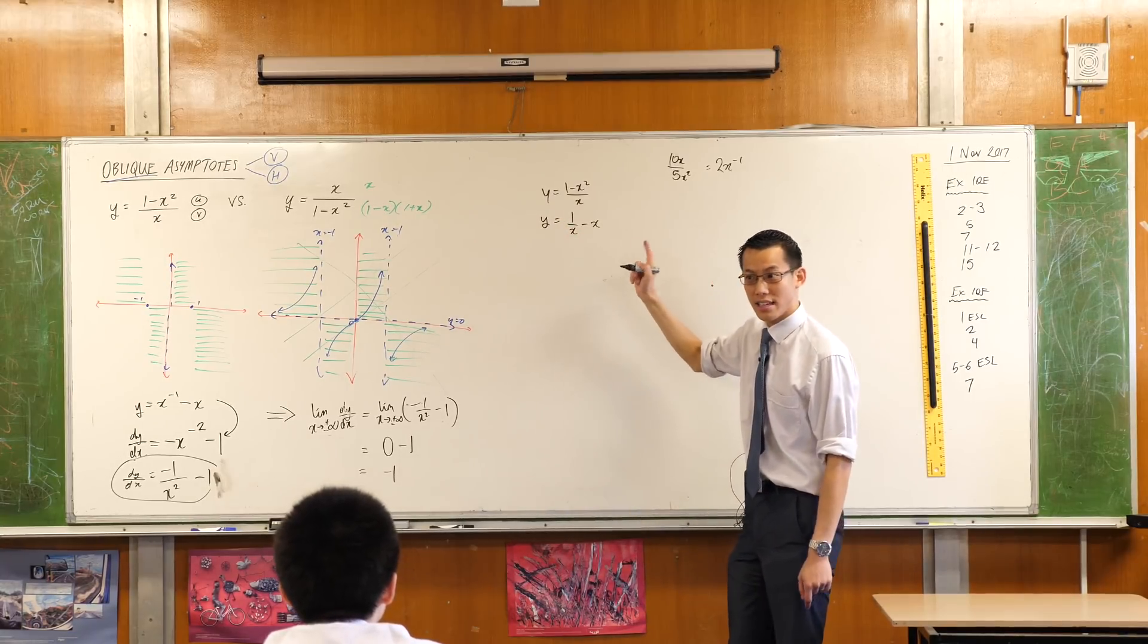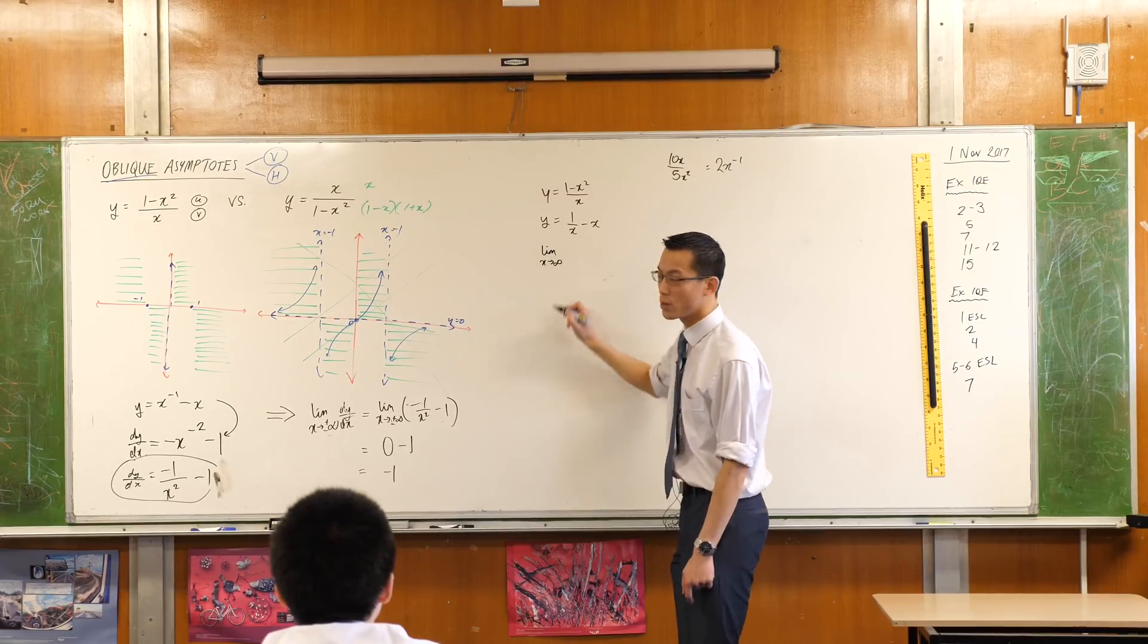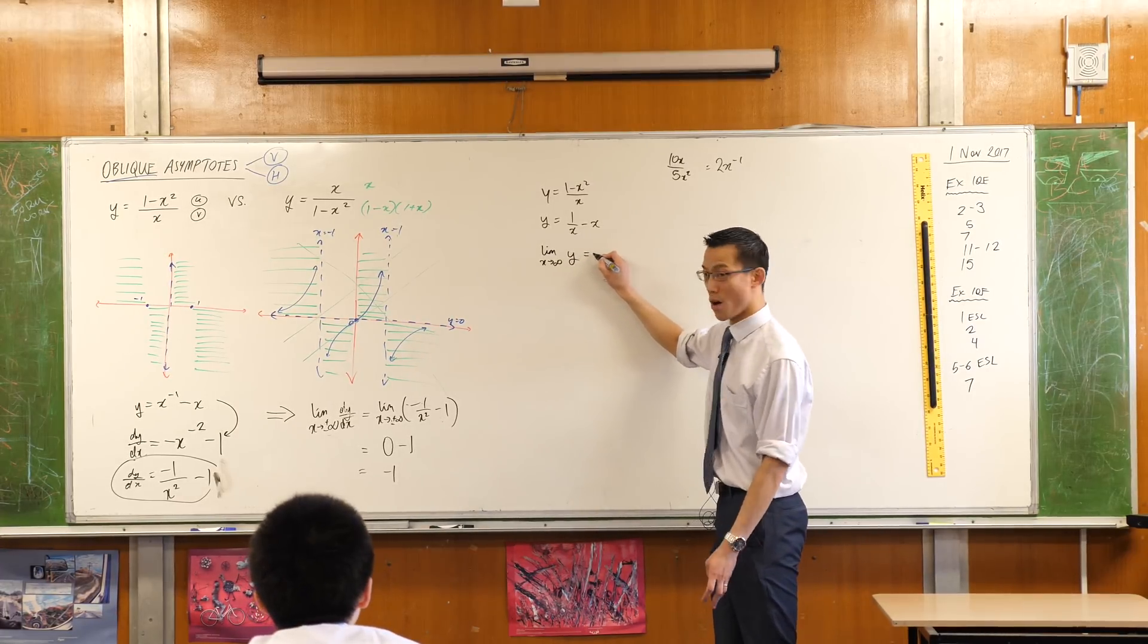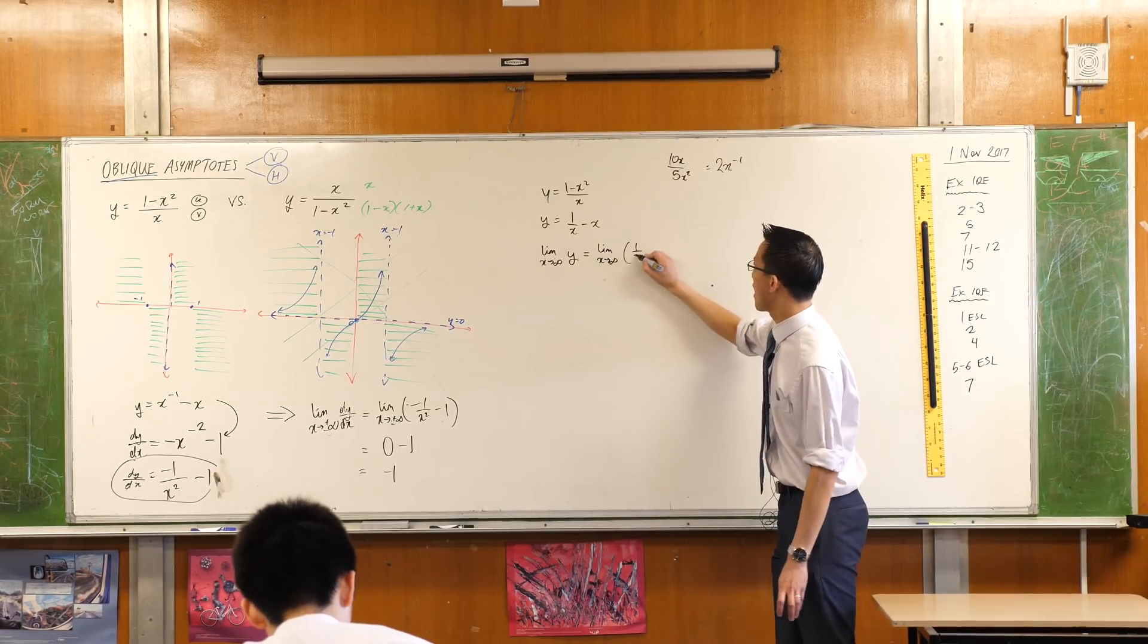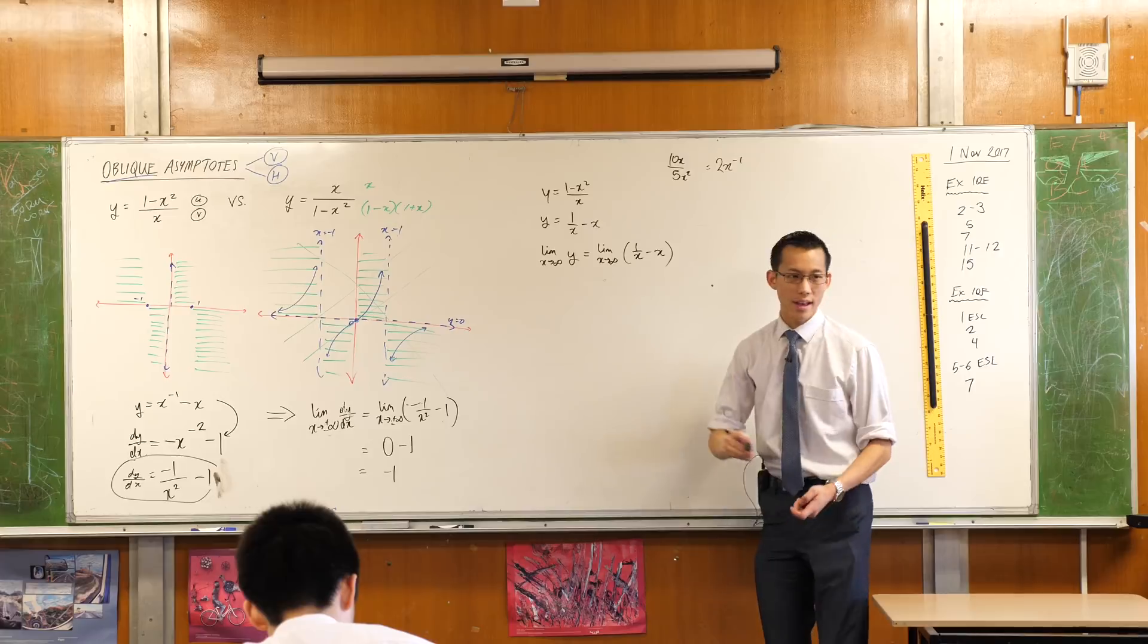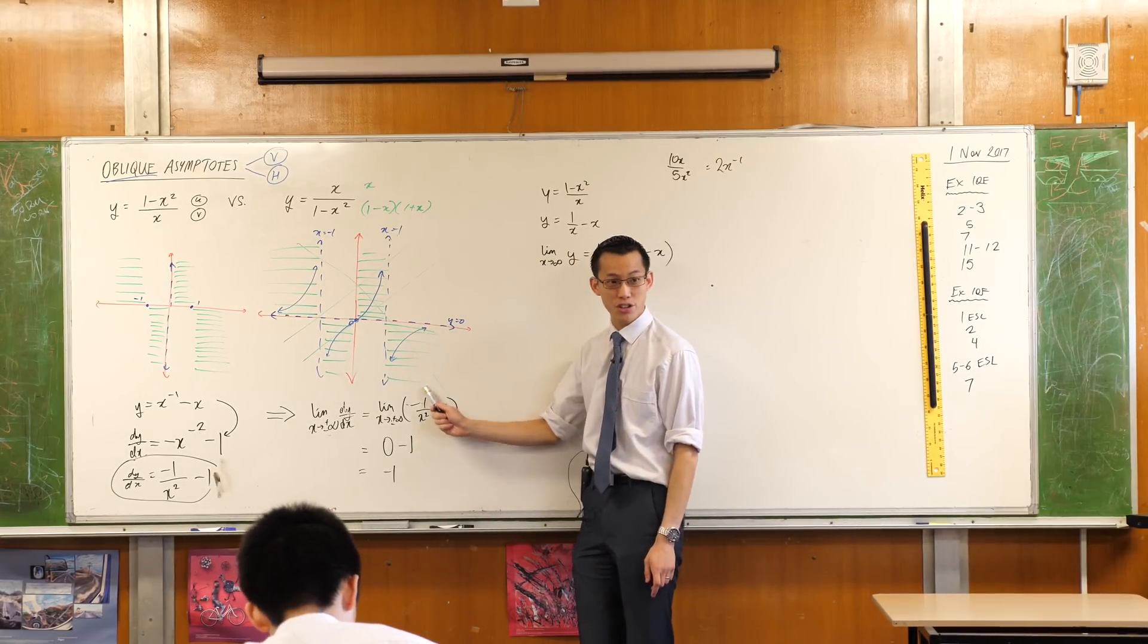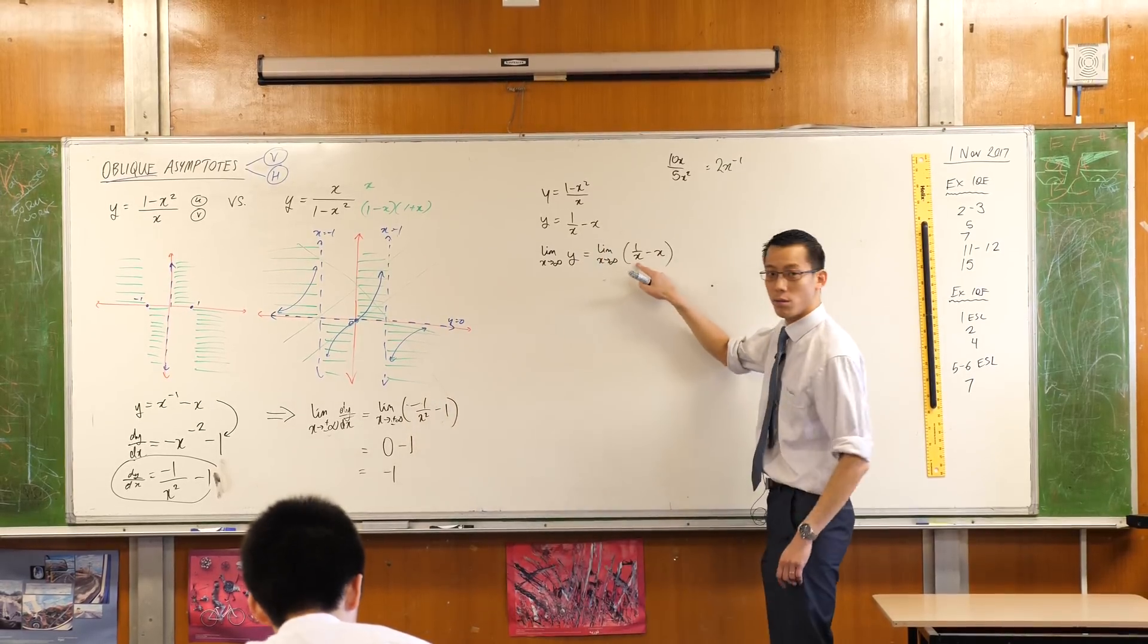I can think about this in terms of limits again. And I have it in a more useful form than what I had before, right? The limit of y is the limit of this. Let's just substitute in that. Now, do you remember you told me, this guy here, it approaches zero, right, as x gets bigger and bigger and bigger.